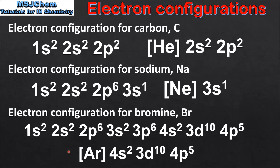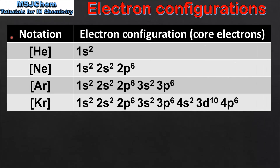Next we look at condensed electron configurations in more detail. Condensed electron configurations, also known as abbreviated electron configurations, use the symbol of a noble gas to represent the core electrons. Square brackets with the symbol He represents the 2 electrons in the 1s sublevel. Square brackets with Ne represent the core electrons in the 1s, 2s, and 2p sublevels. Square brackets with Ar represent the core electrons up to the 3p sublevel, and square brackets with Kr represent the core electrons up to the 4p sublevel.